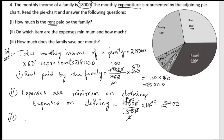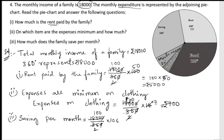The third question: how much does the family save per month? Looking at the savings column in the pie chart, it is 106 degrees. We apply the same formula: (18,000 ÷ 360) × 106. After cancelling zeros, 18 divided by 2 gives 9, and we get 100 × 53.